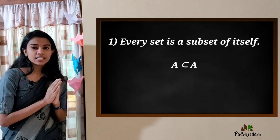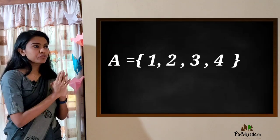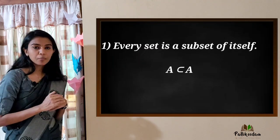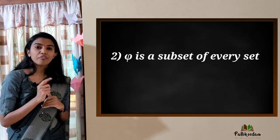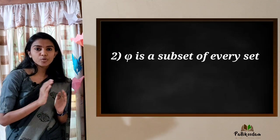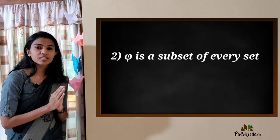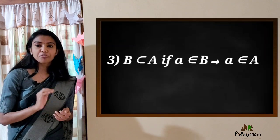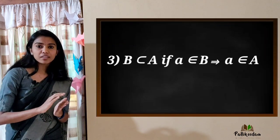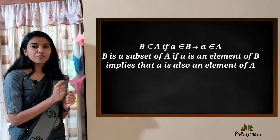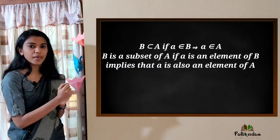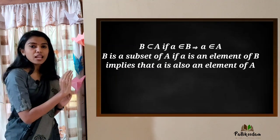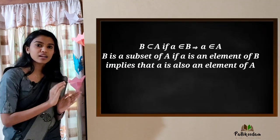Now the important points. First point: every set is a subset of itself. If A = {1, 2, 3, 4}, then A is a subset of A, denoted A ⊆ A. Second point: the empty set (∅) is a subset of every set. Third point: B ⊆ A means if every element of B implies it is an element of A.